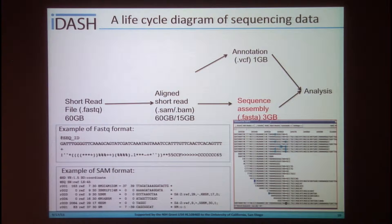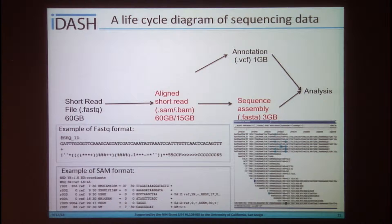VCF is used by the 1000 Genomes Project to encode SNPs and other structural genetic variants. Sequence assembly is used to assemble and merge short reads in order to reconstruct the original genome sequence. In this presentation, we will focus on the compression of the SAM format and the FastA format for aligned short reads and sequence assembly data, respectively.